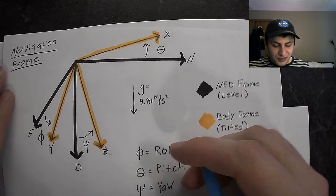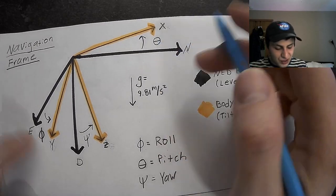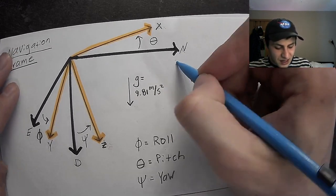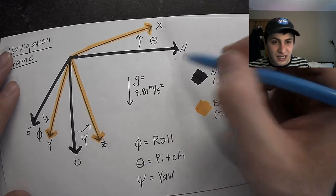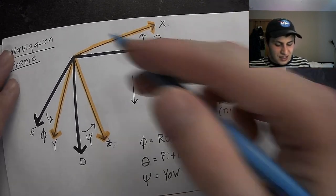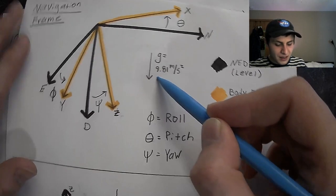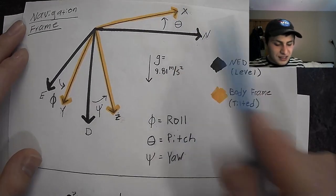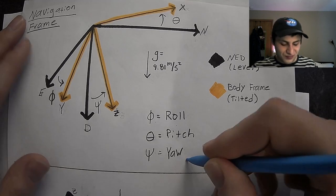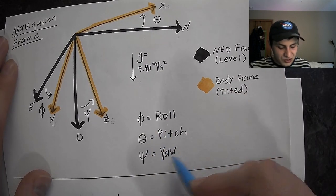We are going to be computing roll and pitch angles with respect to the North-East-Down frame. This North-East-Down frame is a very common coordinate frame used in flight dynamics and controls, and it's very convenient because the down axis — the z-axis — is in the same direction as gravity. Our orientation is going to be described by the roll, pitch, and yaw Euler angles: roll is denoted by phi, pitch by theta, and yaw by psi.